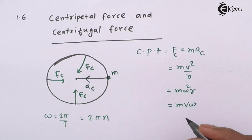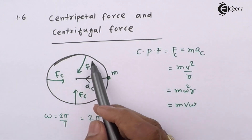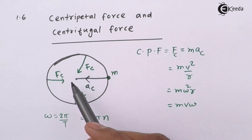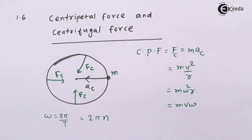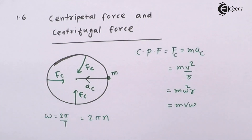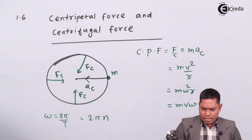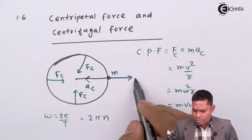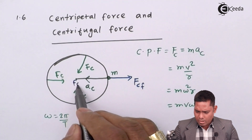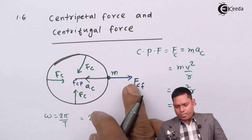Now centripetal force and centrifugal force — what about centrifugal force? Centripetal force is the force responsible for circular motion. If this force is not there, the body will not move in a circular path, so it is a necessary condition. Centrifugal force is equal in magnitude to centripetal force but its direction is exactly opposite — centripetal force is radially inward and centrifugal force is radially outward. So they are oppositely directed and magnitude is the same.